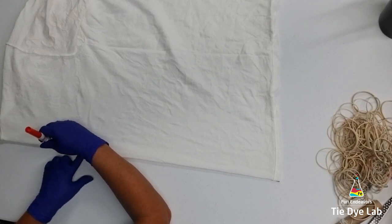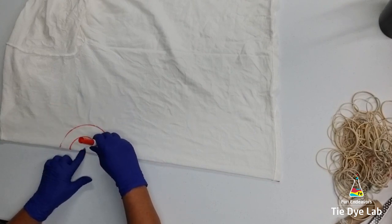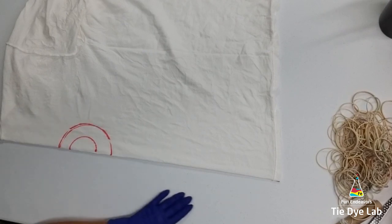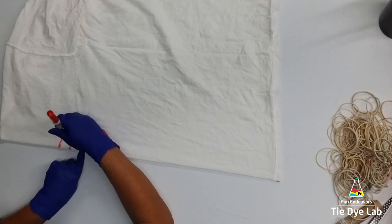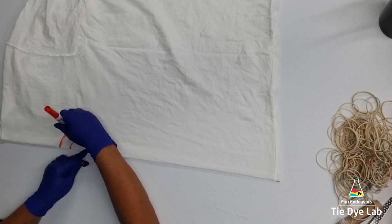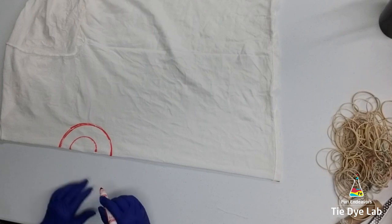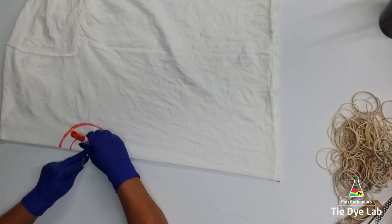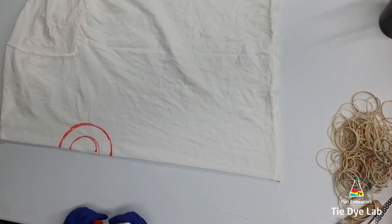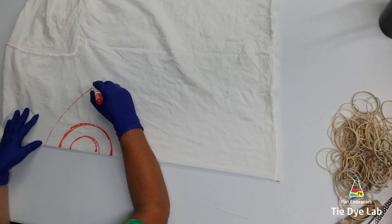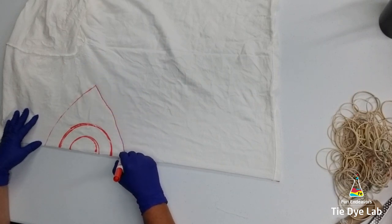Then using a washable marker and a piece of string, I'm going to draw another half circle on for the iris area. Then I'm just going to freehand the rest of an eye onto my shirt.